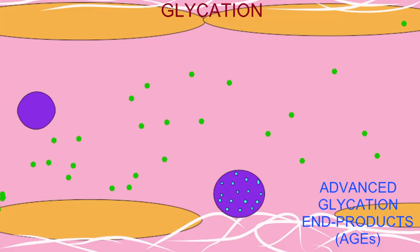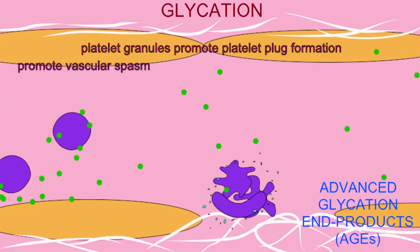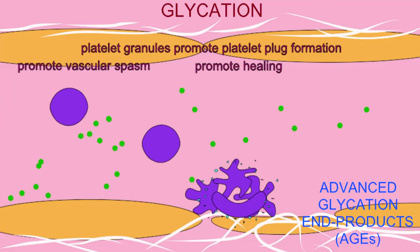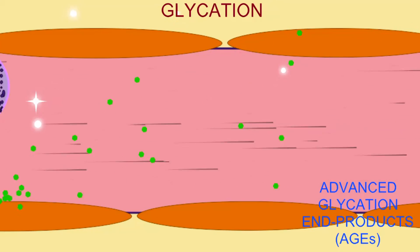Glycation of certain growth factors eliminates their function. For example, platelet-derived growth factor can result in decreased wound healing with age because of glycation and thus inactivation of the growth factor.